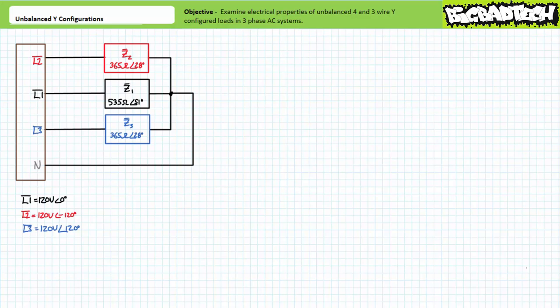An unbalanced load, as the name implies, is one in which the branch impedances comprising the Y-configuration do not exhibit identical impedance magnitudes or angles. Let's take a look at an unbalanced four-wire Y-configuration first. Unbalanced four-wire Y-configurations necessitate only a minor modification of our earlier observations for balanced four-wire Y-configurations. Given different branch impedances, we might expect different current magnitudes and/or phase shifts in each branch.